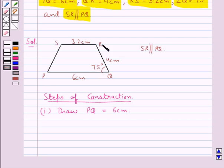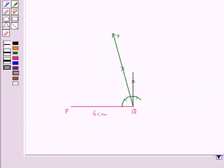Now look at the rough sketch. As you can see, angle Q is 75 degrees. So in the next step, we make angle XQP equal to 75 degrees. This angle XQP is of measure 75 degrees.